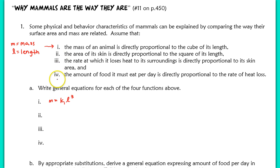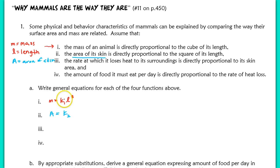Now for line 2: the area of its skin is directly proportional to the square of its length. We introduce a new variable: let A equal the area of the skin. Since area is directly proportional to the square of its length, we have A equals K sub 2 times L squared, using a different constant K₂ than in line 1.